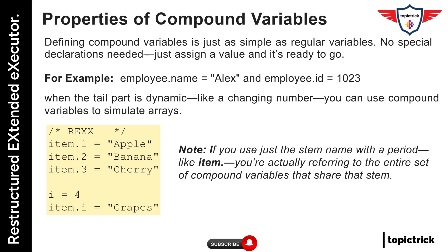If you use just the stem name with a period — like item. — you're actually referring to the entire set of compound variables that share that stem. This is really useful when you want to process all related variables together, like clearing them, looping over them, or checking if any exist.